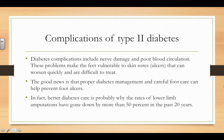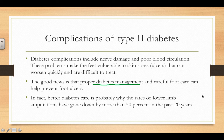Complications of type 2 diabetes include nerve damage and poor blood circulation, which can make feet vulnerable to skin sores and ulcers that are difficult to treat. Sometimes this leads to amputations of lower limbs or feet. The good news is that proper diabetes management can actually help prevent this. This is a complication that type 1 diabetes does not have.